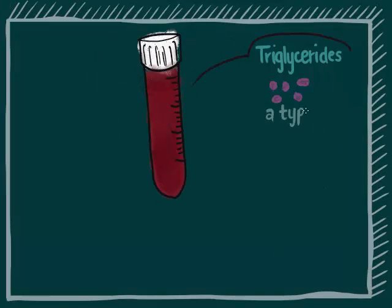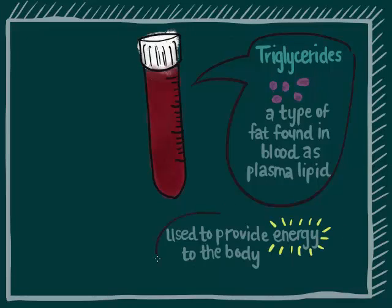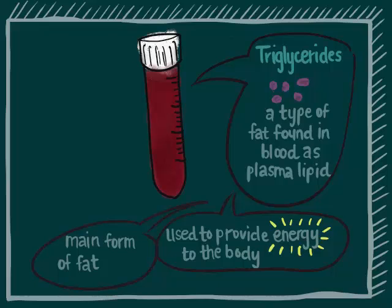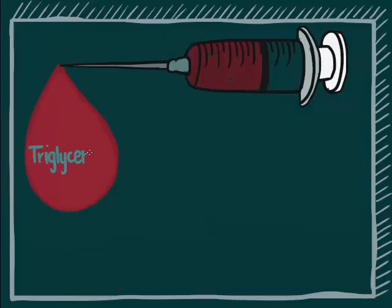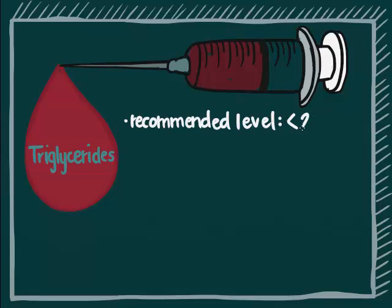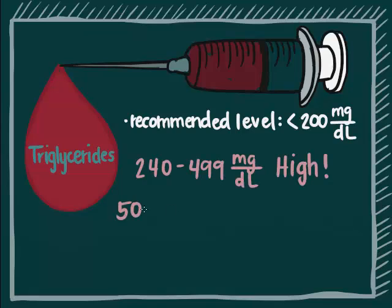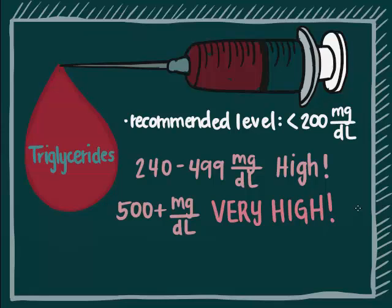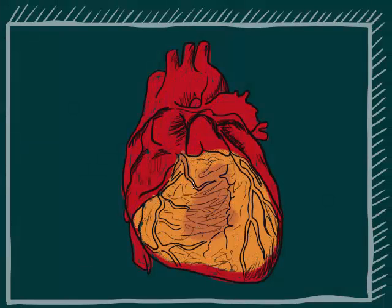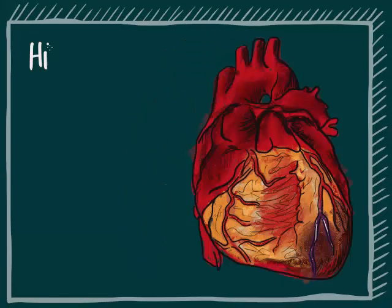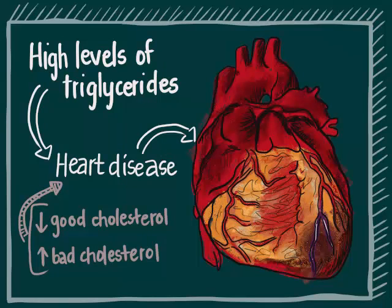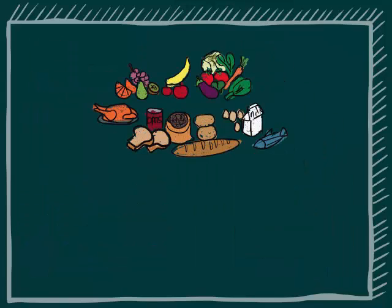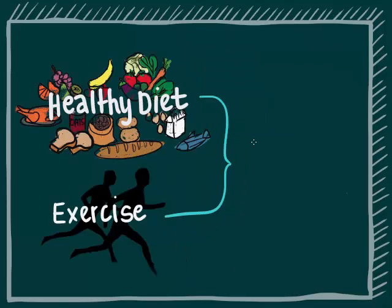Triglycerides are essentially fat in the blood used to provide energy to the body — they are your main form of fat. The recommended level is lower than 200 mg per deciliter. A level of 240 to 499 mg per deciliter is considered high, and a level of more than 500 mg per deciliter is considered very high, so action needs to be taken to lower it. High triglyceride levels may lead to heart disease, especially in people with low levels of good cholesterol and high levels of bad cholesterol. Having a healthy diet and regularly exercising can help lower triglyceride levels and improve cholesterol.